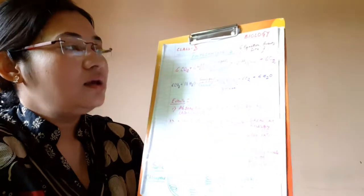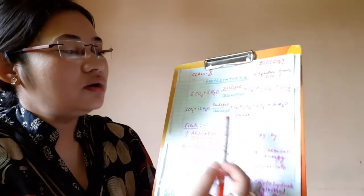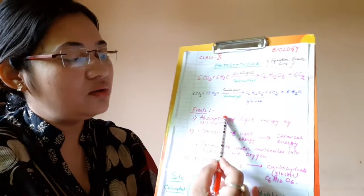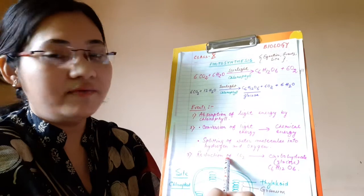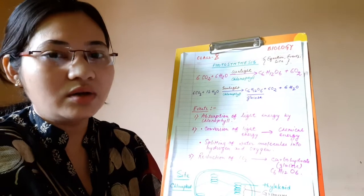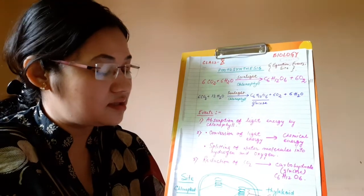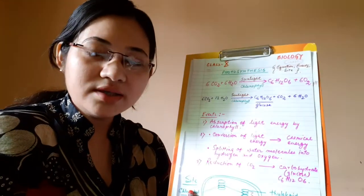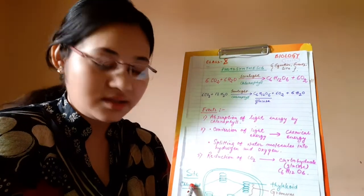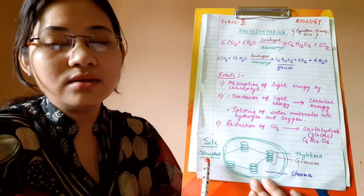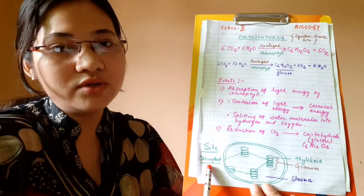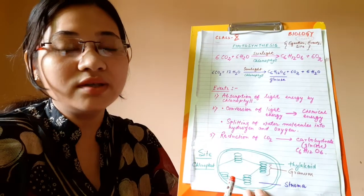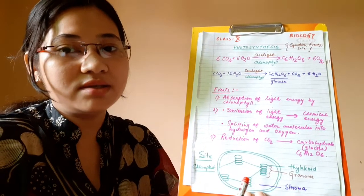We know the chemical equation for photosynthesis and the events. Now, where does photosynthesis take place? That means, what is the site for photosynthesis? The site means the place where photosynthesis takes place.